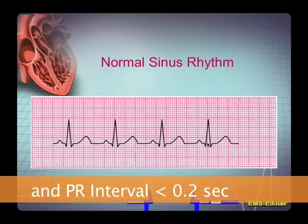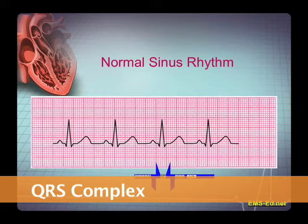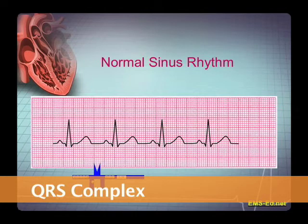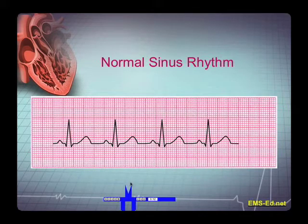Now let's look at the QRS complex. In order to be within normal parameters, the QRS complex needs to be less than three little boxes. So let's take our calipers and set them at three little boxes, or 0.12 seconds, and ask ourselves: is the QRS complex less than that? It appears to be so — we have a normal QRS complex. Were this a 12-lead EKG, we might look for evidence of a pathological Q wave or ST segment changes, which we cover in another video. So what do we have here? We have a normal sinus rhythm — the rate is between 60 and 100, and there are no blocks or ectopy.